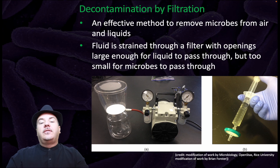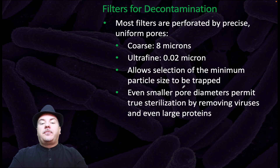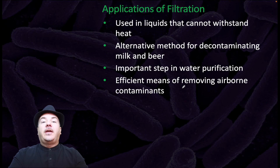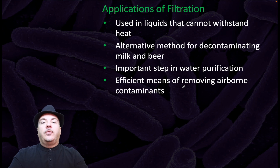We can also decontaminate by filtration, which is an effective method to remove microbes from air and liquids. Fluid is strained through a filter with openings large enough for liquid to pass through but too small for microbes to pass through. Most filters are perforated by precise uniform pores. A coarse filter is 8 microns; ultrafine is 0.02 microns. This allows selection of the minimum particle size to be trapped. Even smaller pore diameters permit true sterilization by removing viruses and even large proteins. Filtration can be used for liquids that cannot withstand heat, as an alternative method for decontaminating milk and beer, as an important step in water purification, and as an efficient means of removing airborne contaminants — for example, a HEPA filter to filter air.